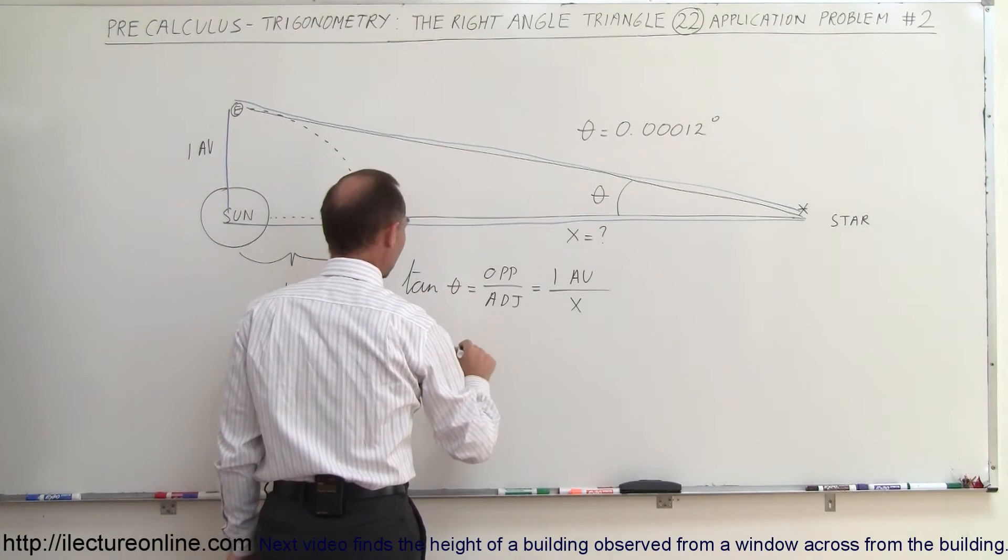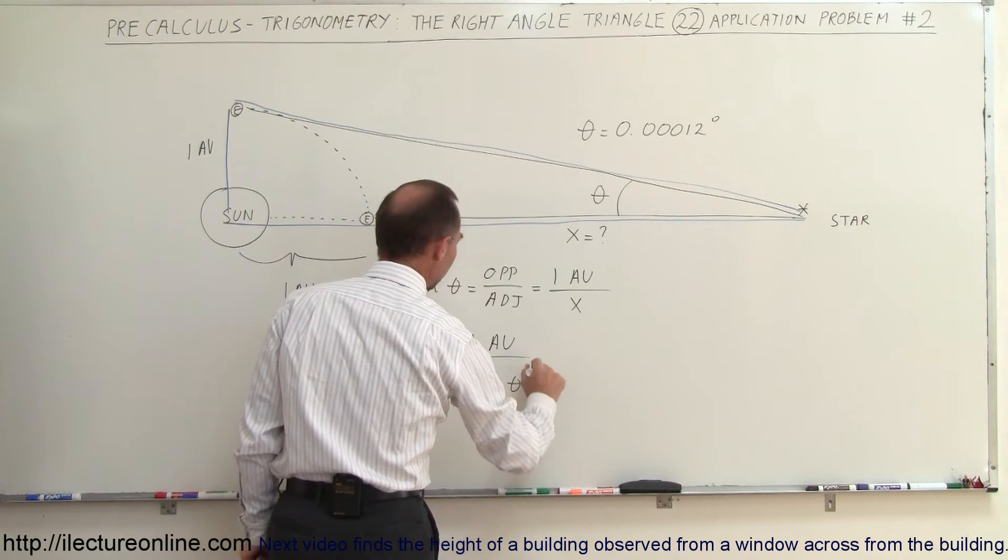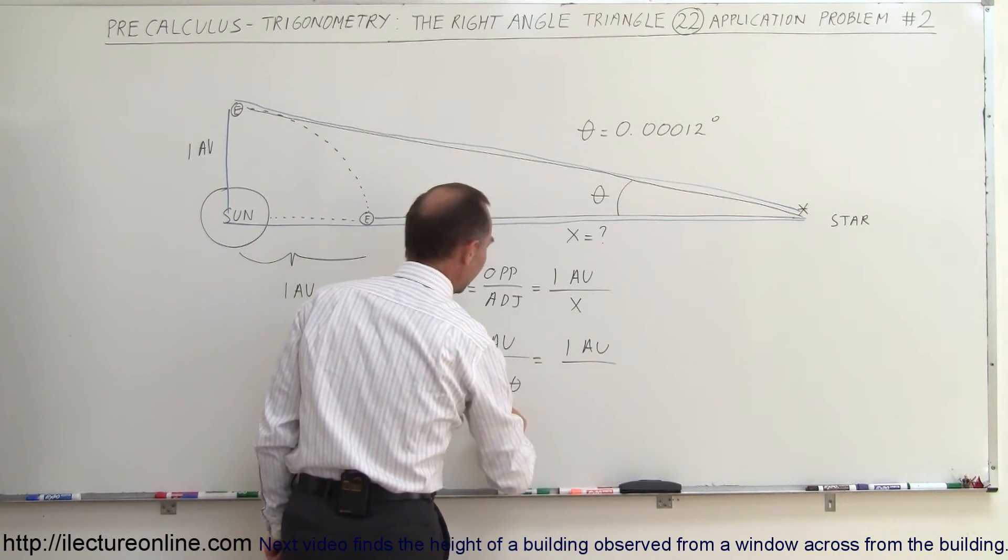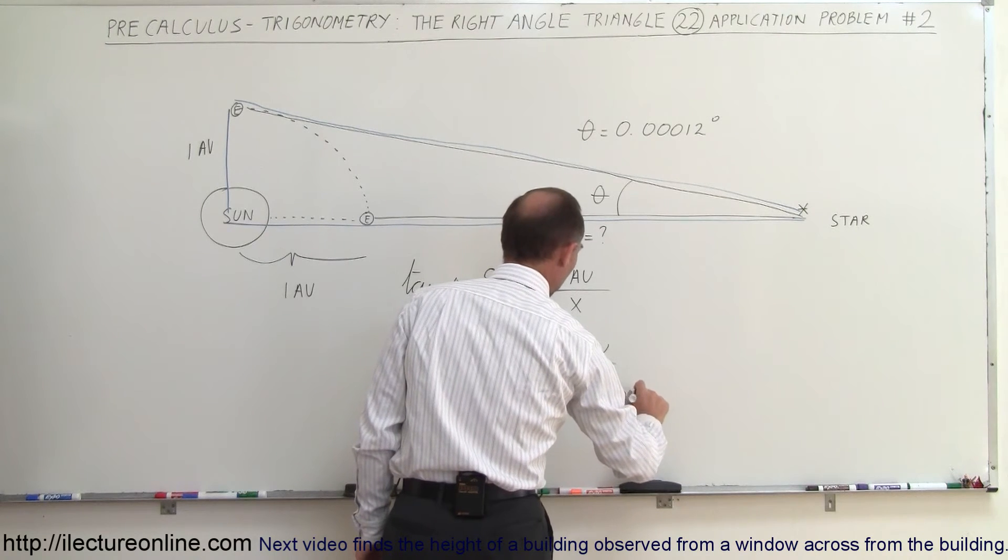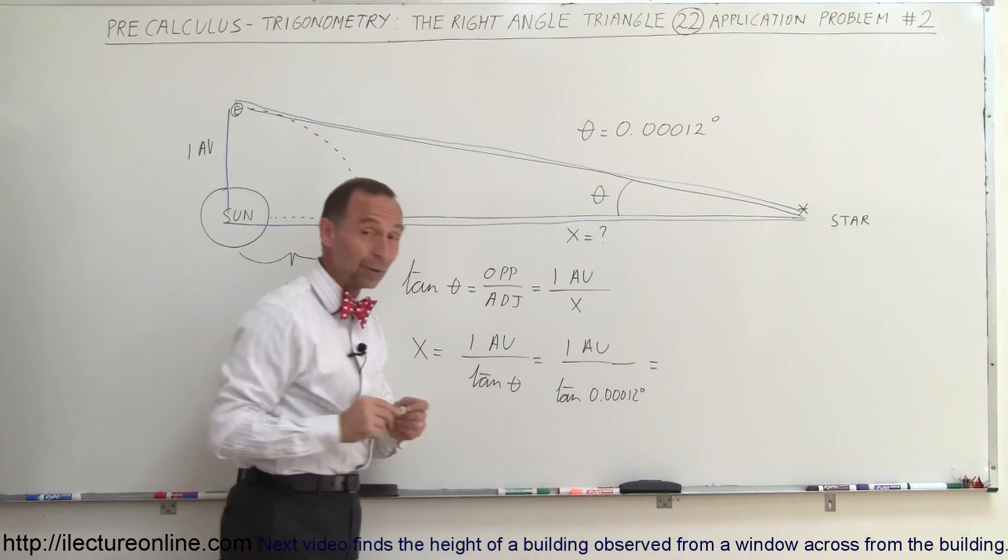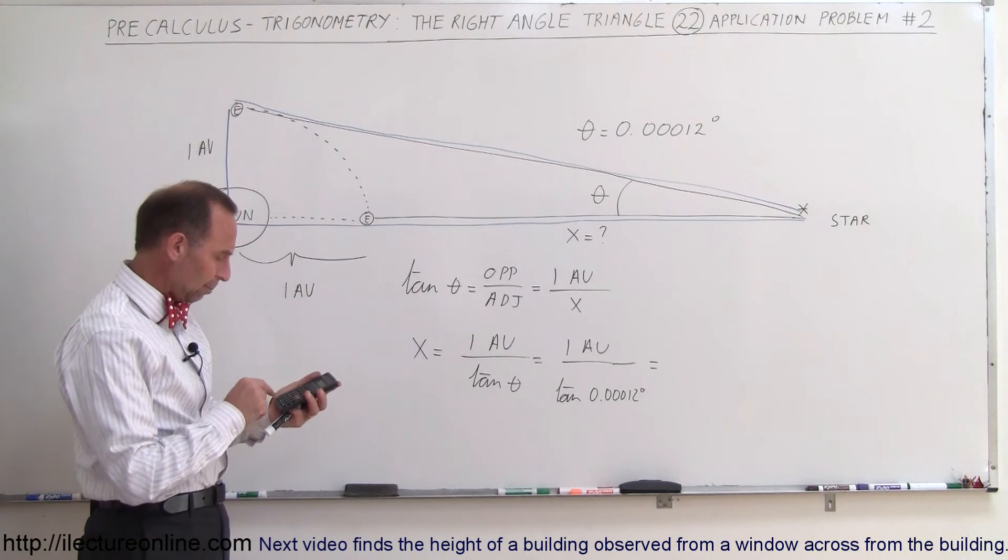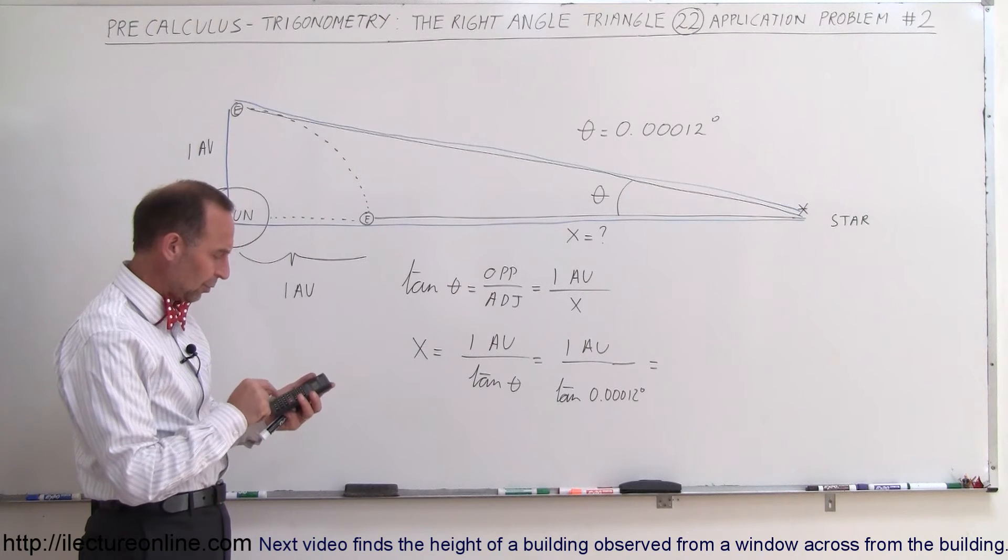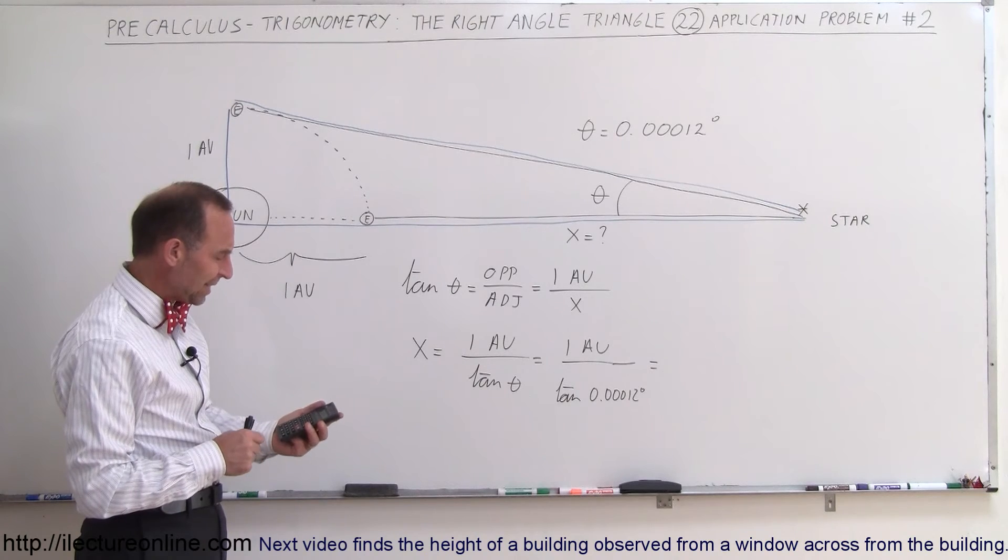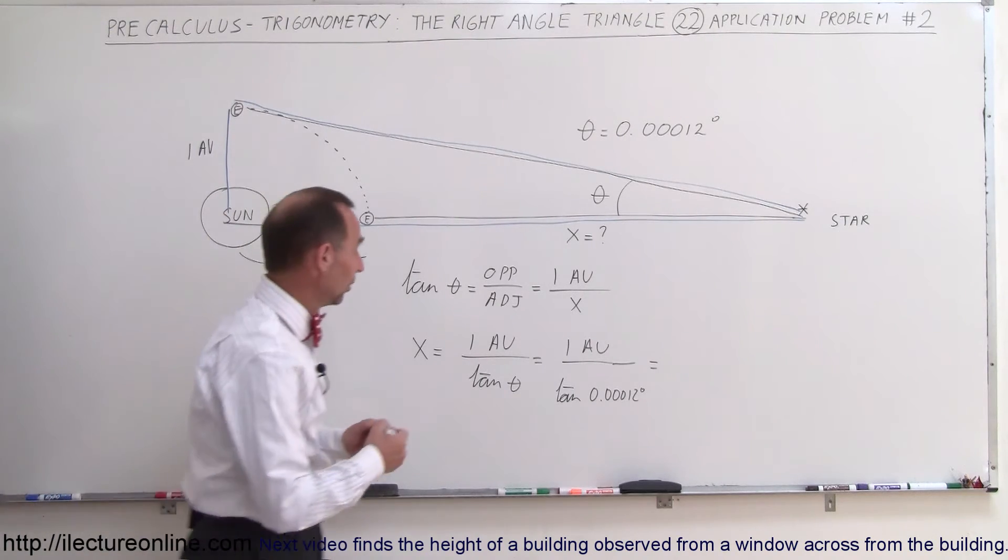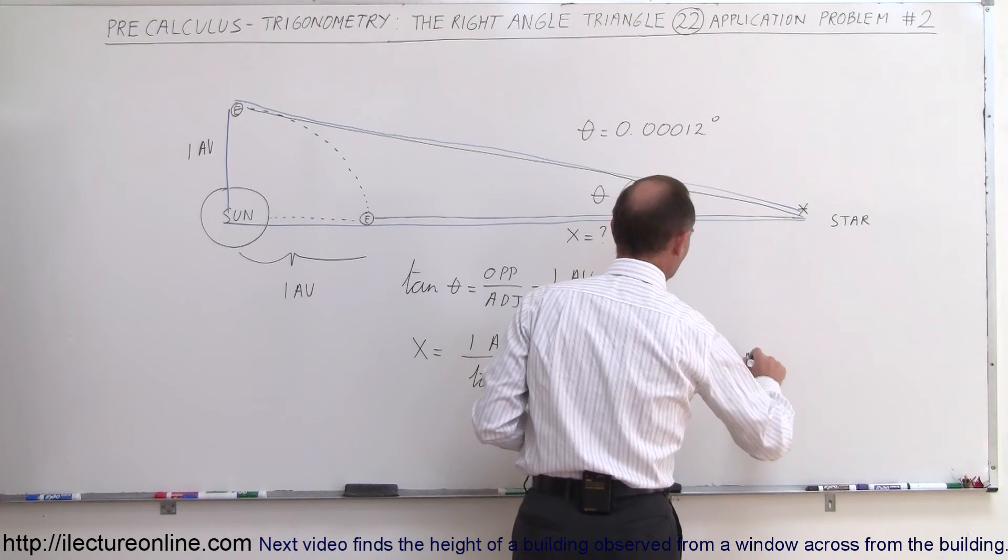So we have X equals one astronomical unit divided by the tangent of theta, and that would be one astronomical unit divided by the tangent of 0.00012 degrees. Now that we know that, let's go ahead and grab our calculator. So we have 1 divided by 0.00012, take the tangent of that, equals, and it's 477,000 astronomical units. So X equals 477,000 astronomical units.